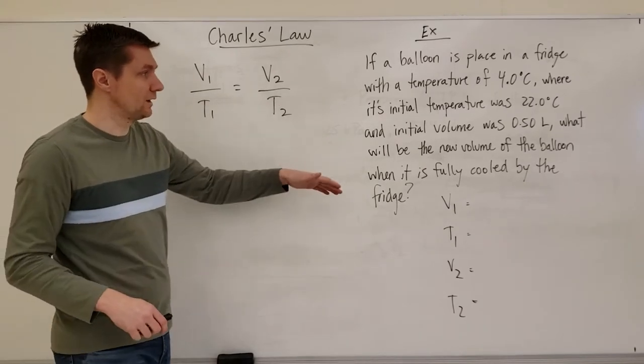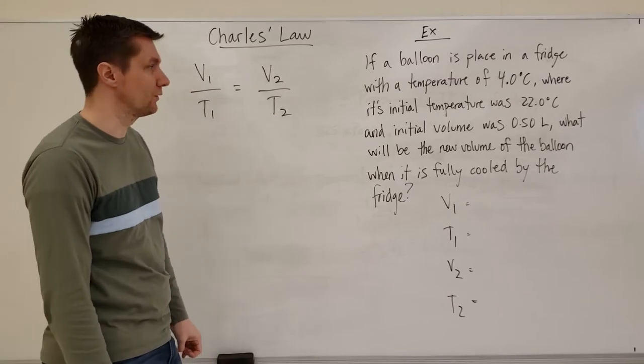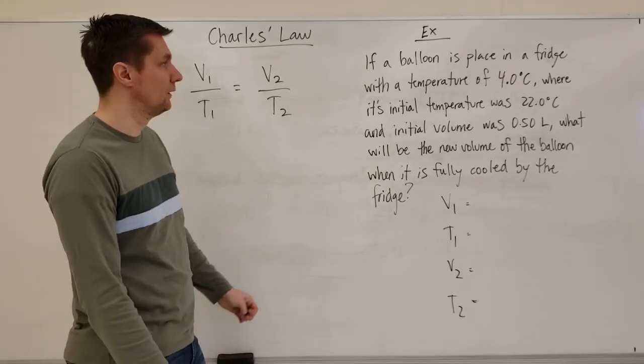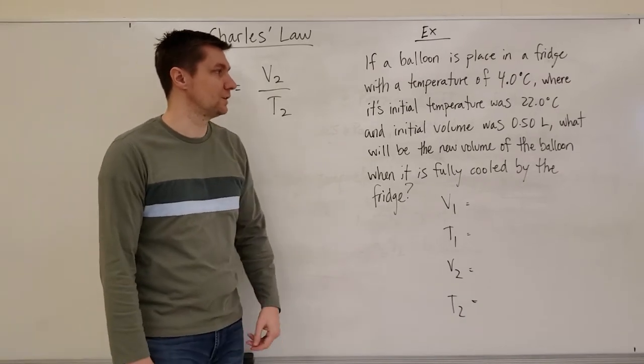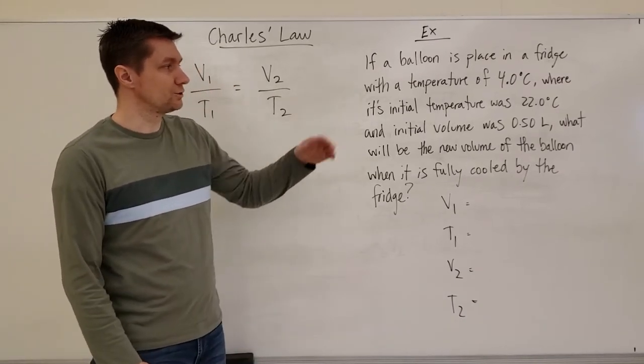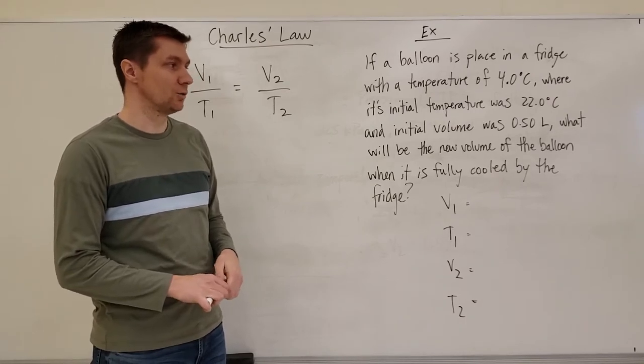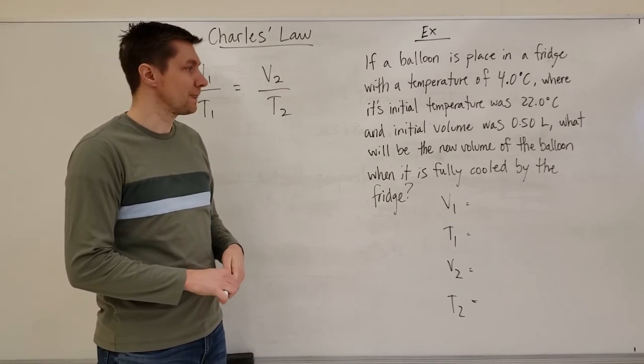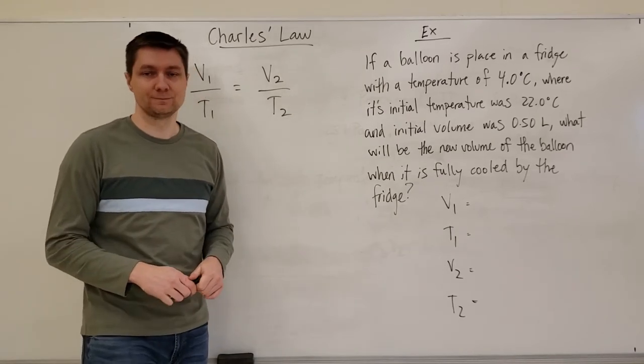So let's read this example, go through this problem and show you how I would show the work for this. It says if a balloon is placed in a fridge with a temperature of 4 degrees Celsius, where its initial temperature was 22 degrees Celsius and initial volume was 0.50 liters, what will be the new volume of the balloon when it's fully cooled by the fridge?